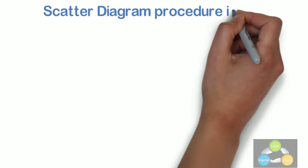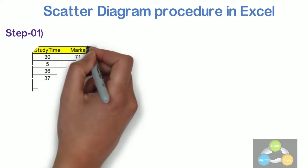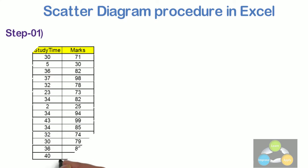Now, let's see the scatter diagram procedure in Excel. Step 1. Open the worksheet that contains the data that you want to plot into the scatter chart. Let's have an example of study time versus marks obtained in a particular examination.